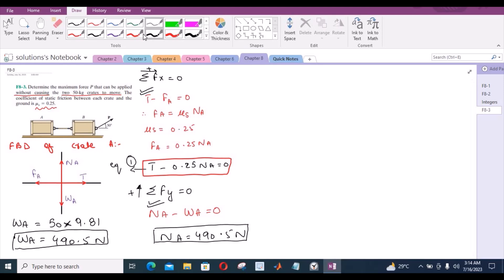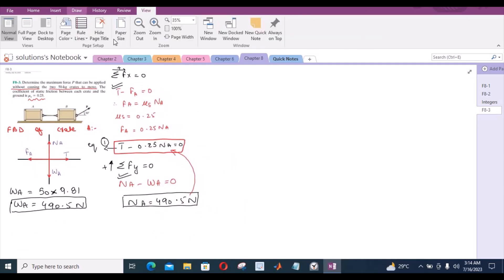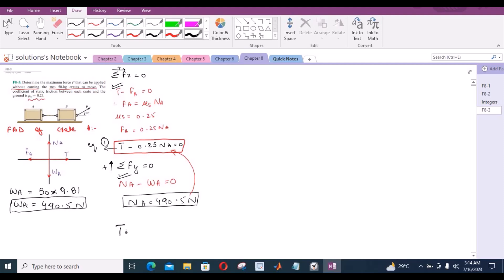So if I substitute it into this equation, then tensile force comes out to be 0.25 times 490.5, which is equals to 122.625 Newtons.